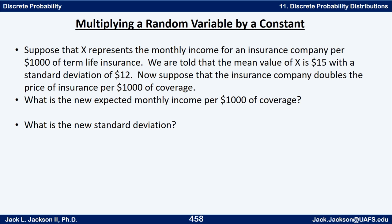Suppose the insurance company doubles the price per thousand dollars of coverage, where x has mean $15 and standard deviation $12. When we double x, both the mean and standard deviation double. The new mean is $30 and the new standard deviation is $24 — doubling also increases the variability.